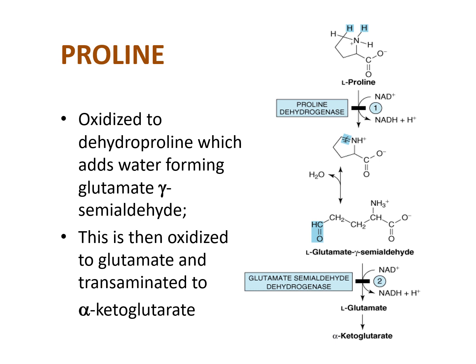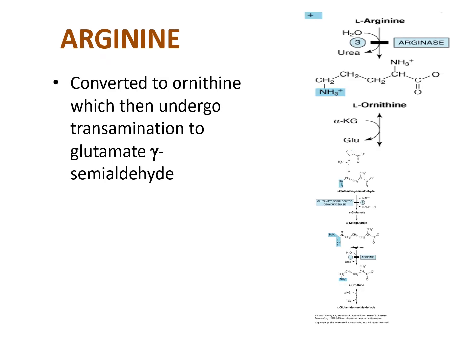Proline is oxidized to form glutamate semi-aldehyde, which is then oxidized to glutamate and transaminated to alpha-ketoglutarate. Arginine is converted to ornithine, which undergoes transamination to glutamate semi-aldehyde, eventually leading to alpha-ketoglutarate.